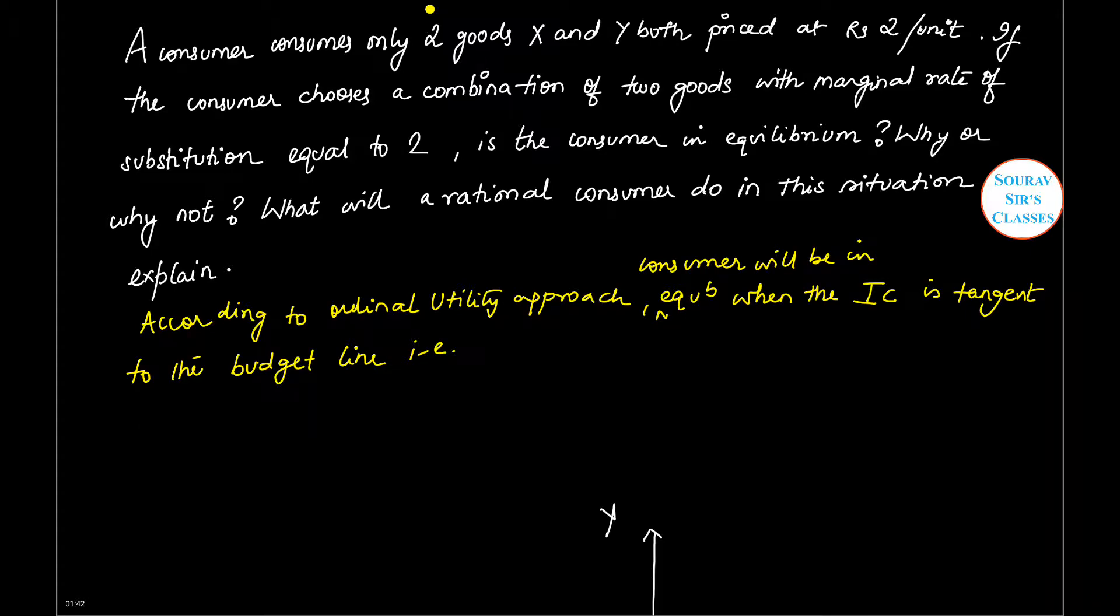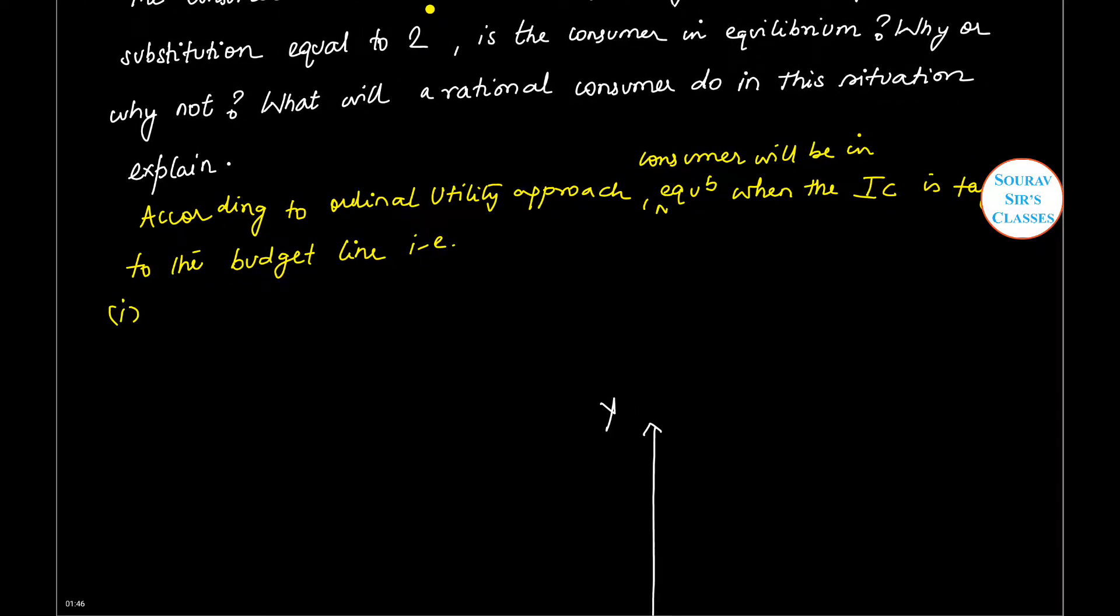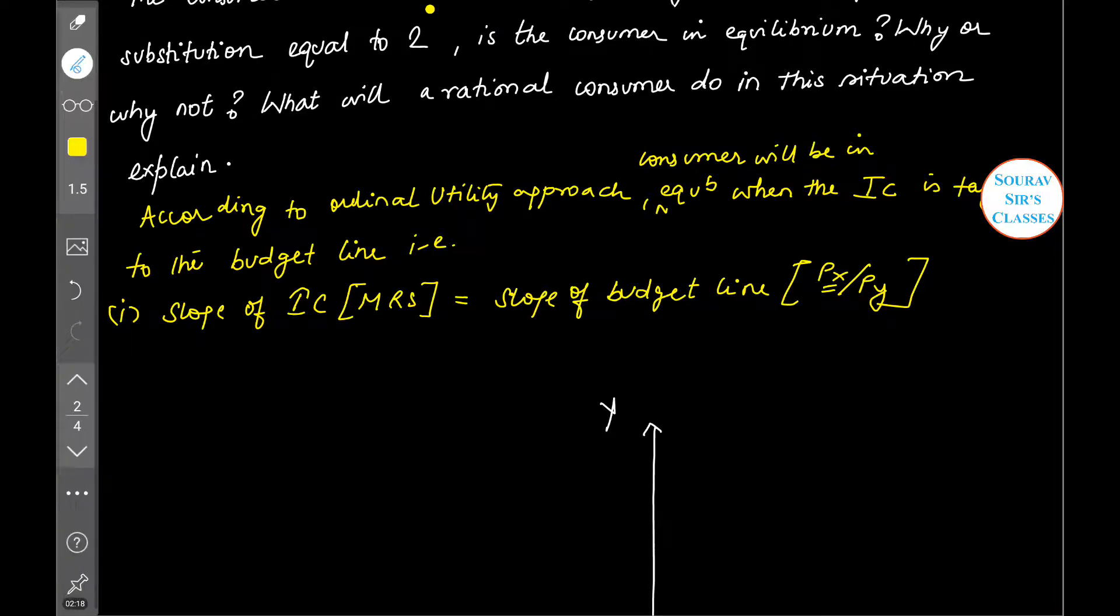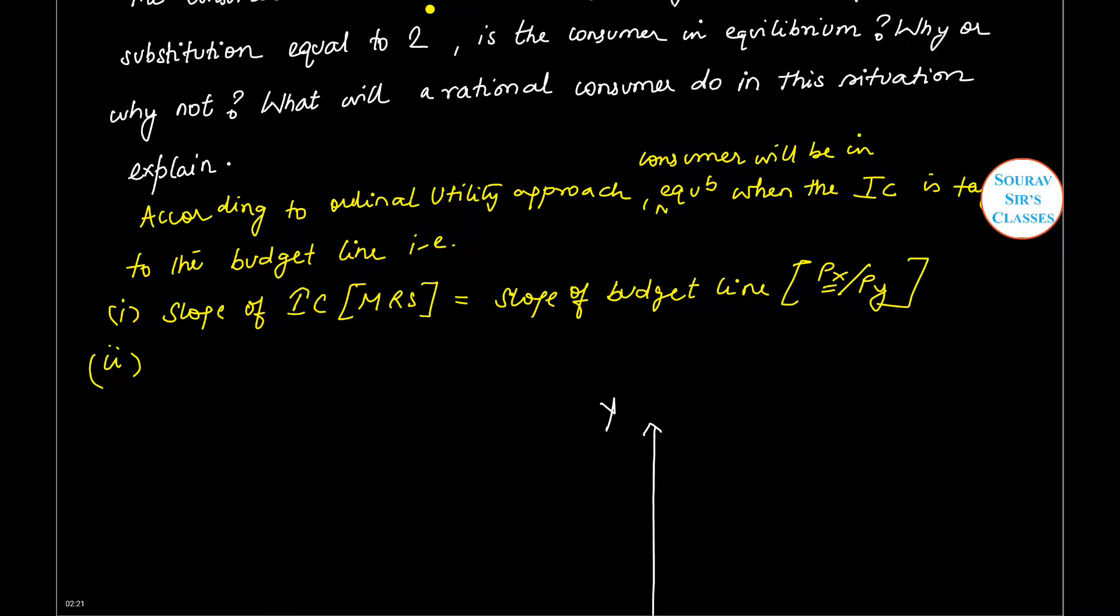Number one: slope of indifference curve, which is nothing but the marginal rate of substitution (MRS), must be equal to the slope of budget line, given by Px/Py if we are measuring X on the horizontal axis. Number two: IC should be convex to the origin.